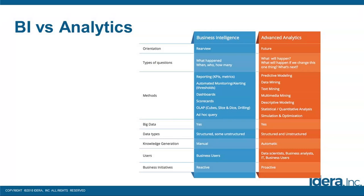Both BI and analytics support big data and both structured and unstructured data types. For knowledge generation, business intelligence is a more manual process, whereas with machine learning, artificial intelligence, and algorithmic programs, advanced analytics has a more automated scope. In terms of users, with BI you tend to see business users, business analysts, and management. With analytics, you start hearing about data scientists and people in IT doing algorithms and machine learning, with data scientists and mathematical types working on the predictive modeling side.